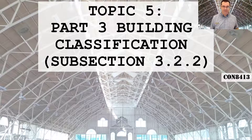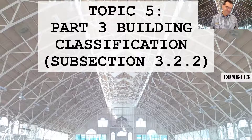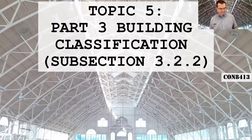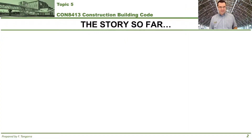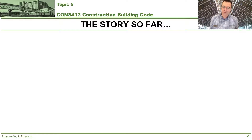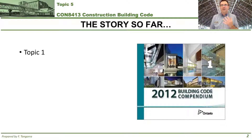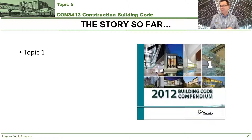Let's get started! Let's summarize where we are and how we got here. We started off with topic 1, where hopefully you were introduced to what the building code is, how it's laid out between the two volumes, what its different parts are, and how to reference any specific item within the building code.